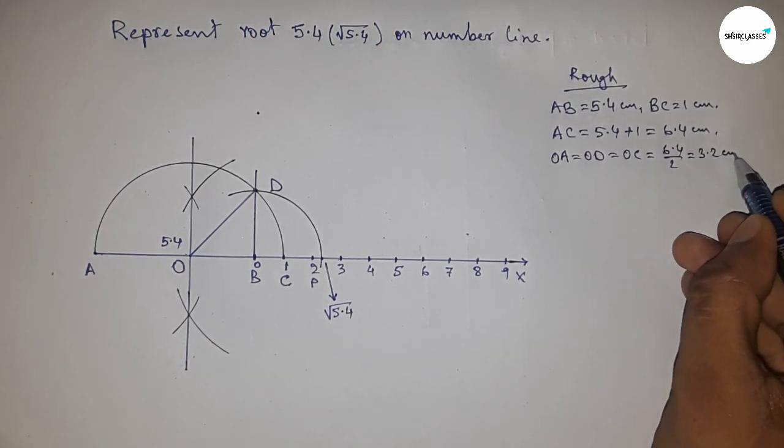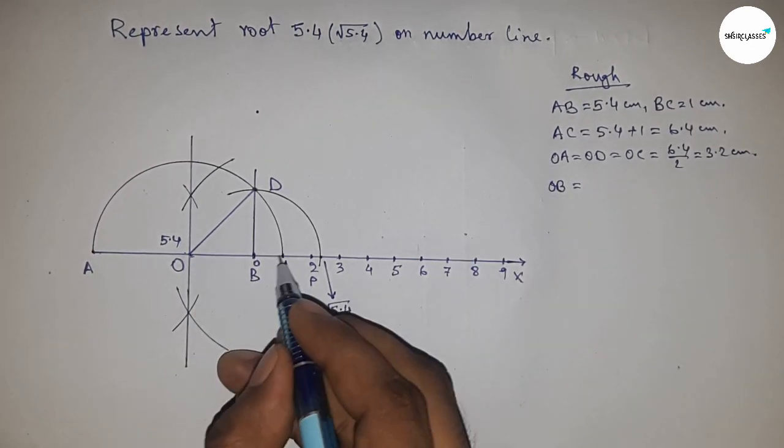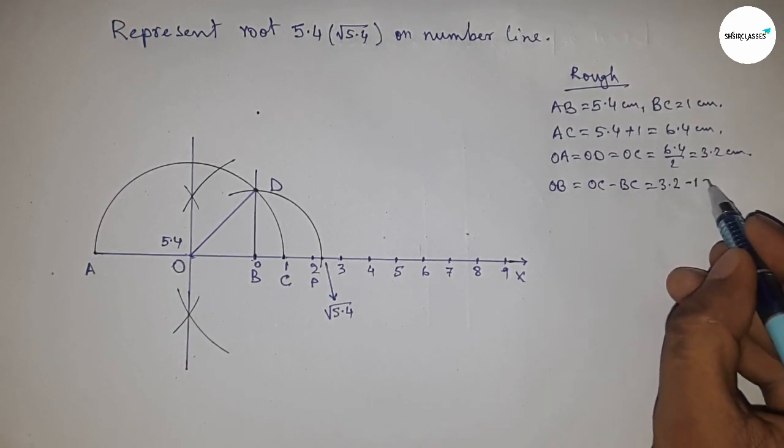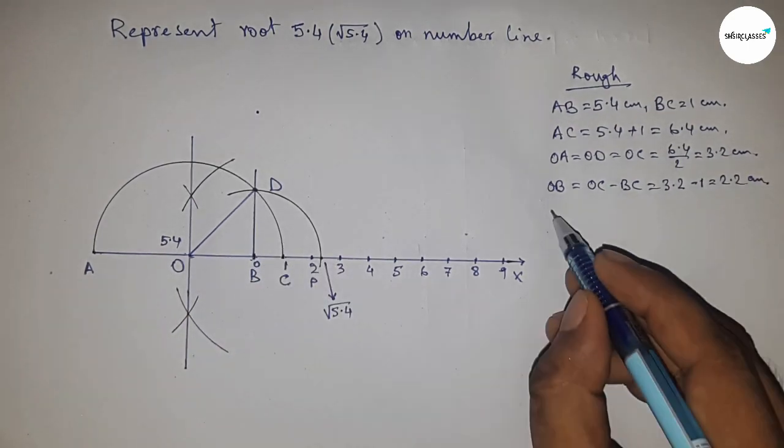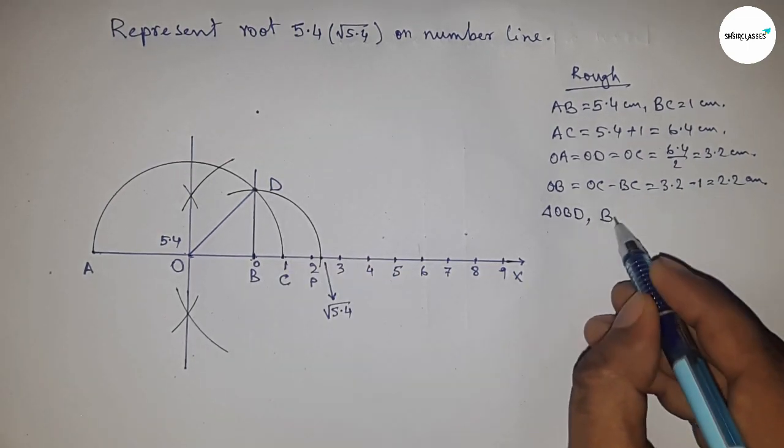Now OB equals, we can write OC minus BC. So putting the value of OC and BC, this is 2.2 centimeters. Now from right angle triangle OBD, we can write BD equals, by Pythagoras theorem, hypotenuse square minus base square.